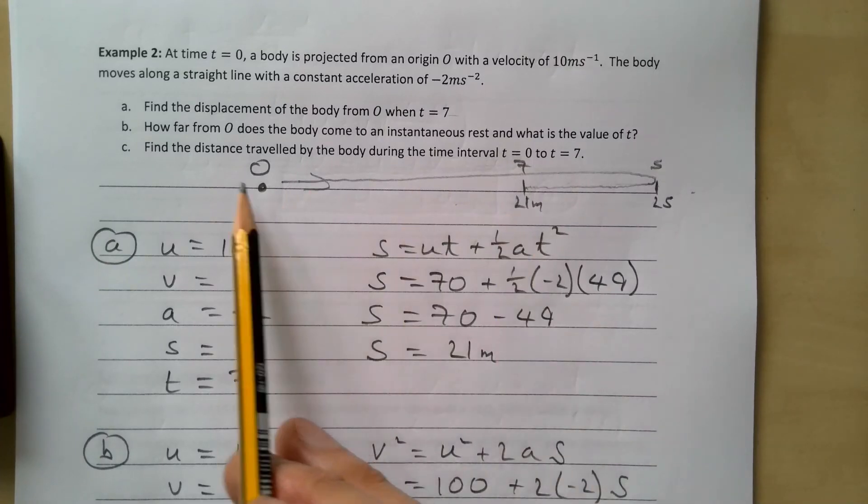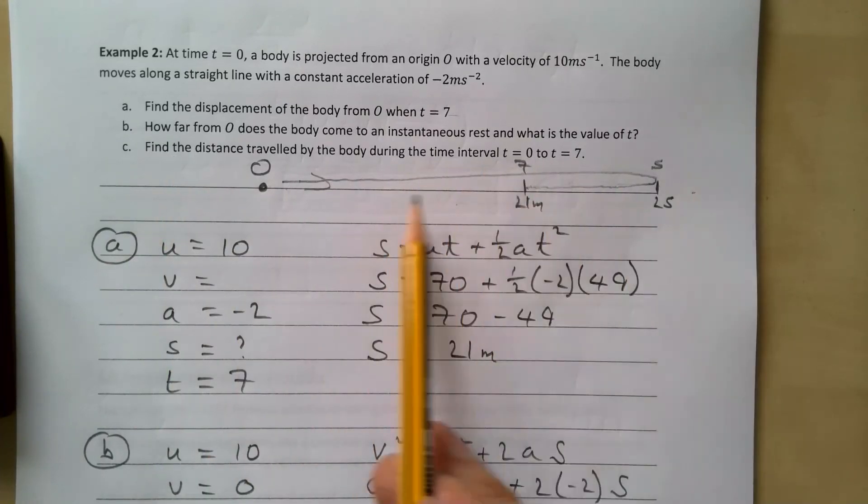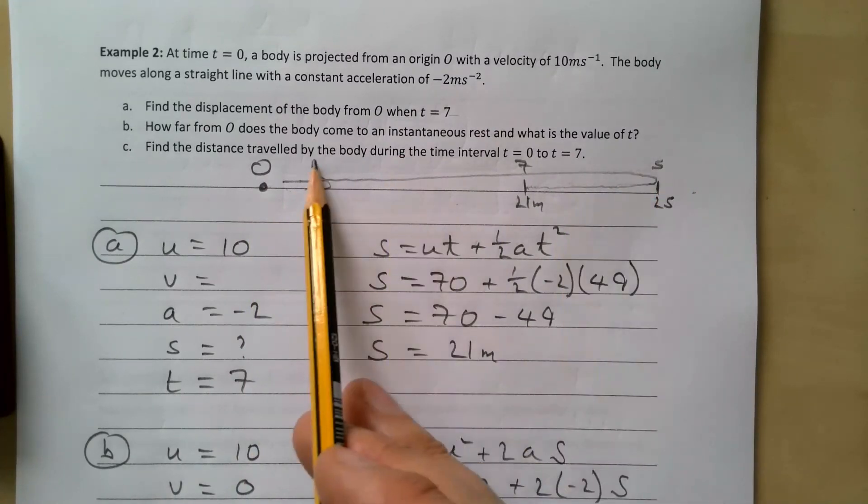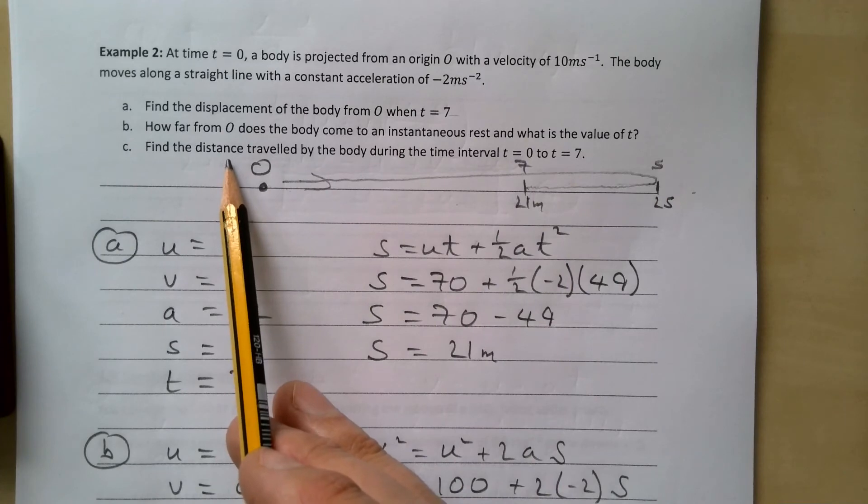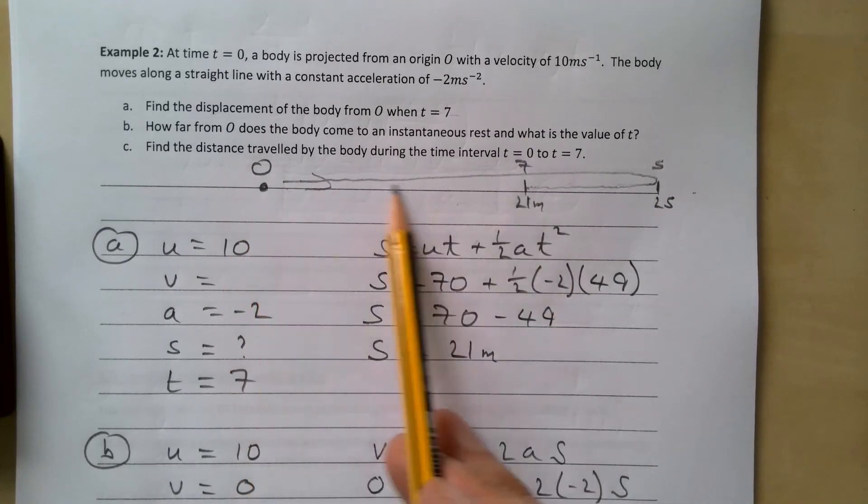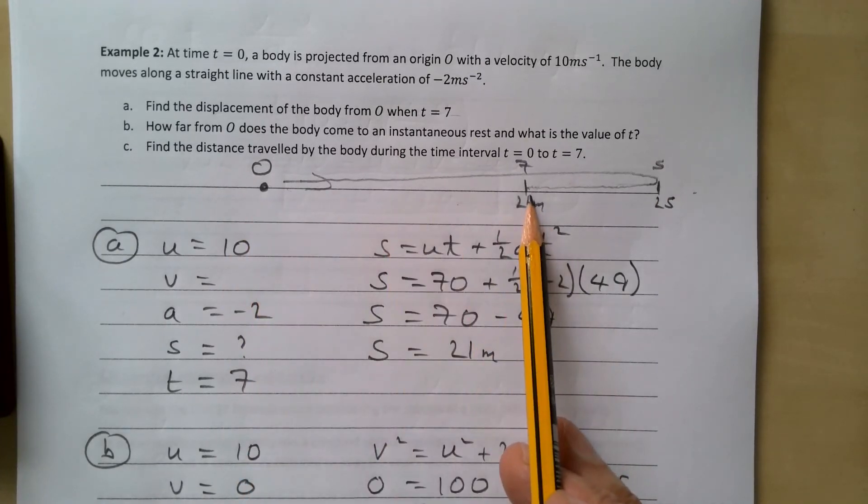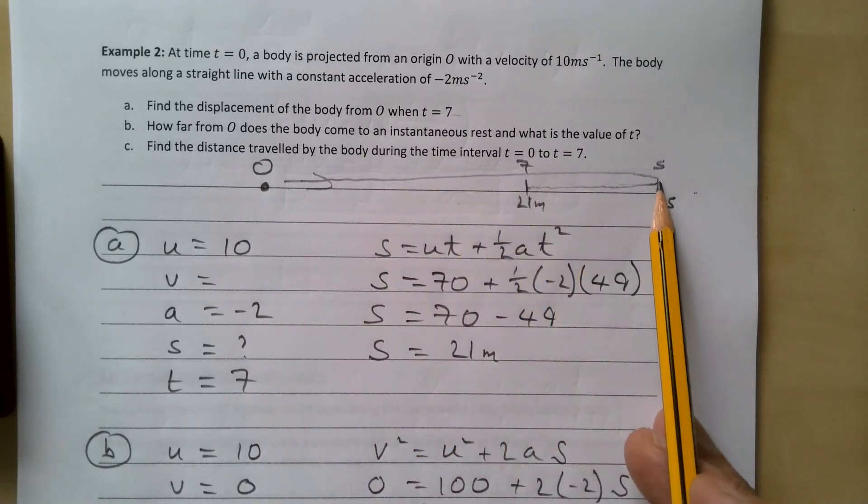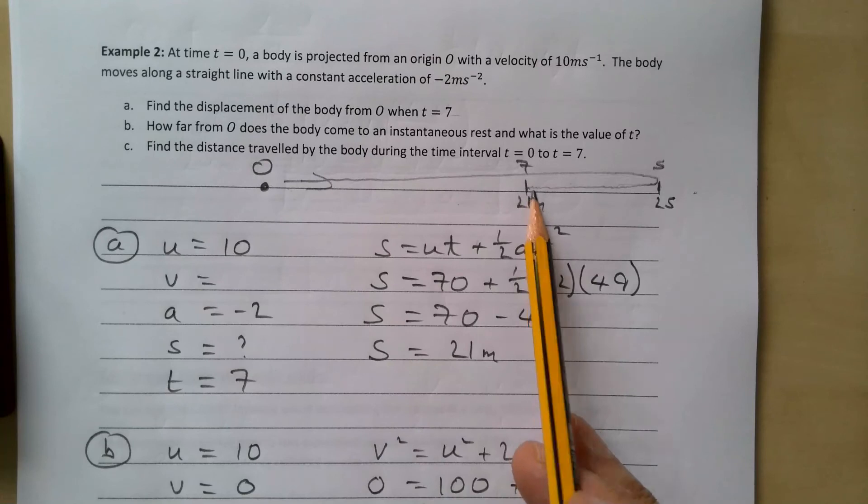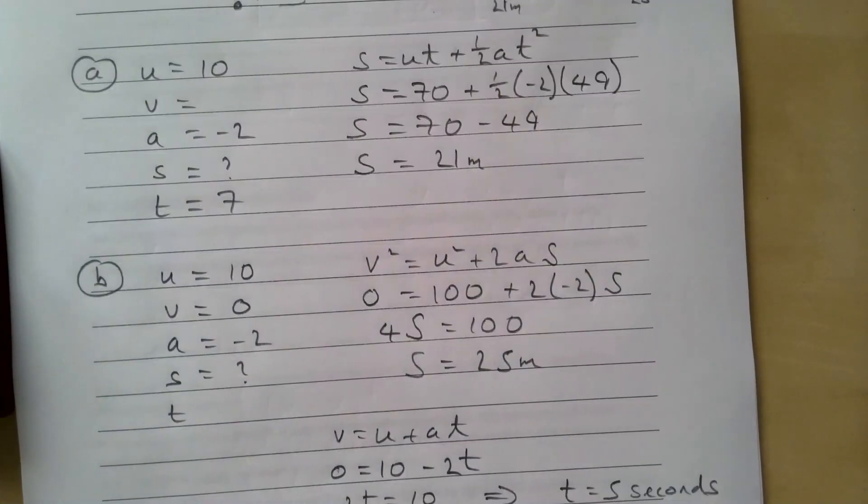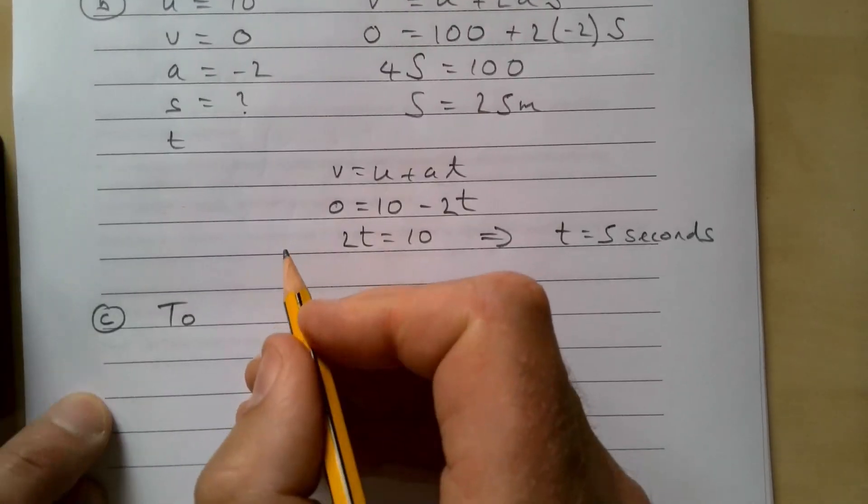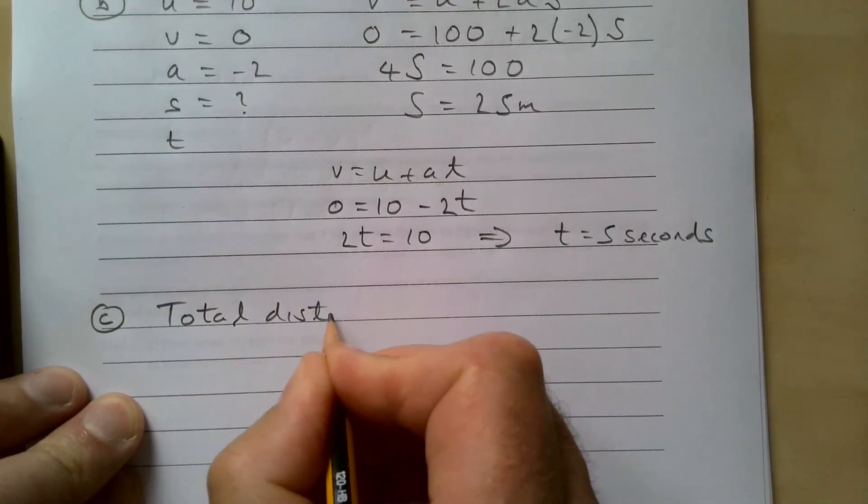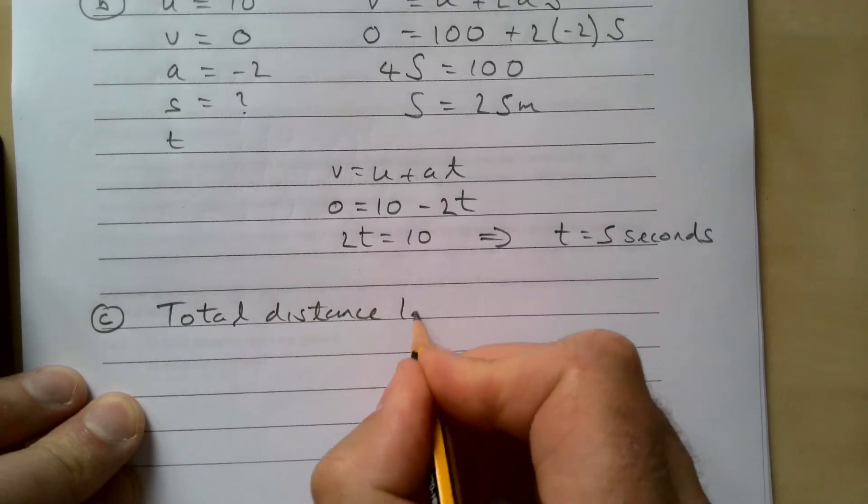So what's happened? Find the distance traveled by the body during this time. So it's gone from here to here, which is 25. Remember it's distance. Now if we were asked for displacement after seven seconds, how far is it from its start position? It's 21. But it hasn't traveled 21 meters. It's traveled from here to here, which is 25, and then back to here, which is 4.